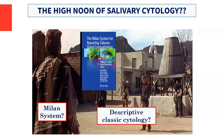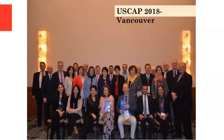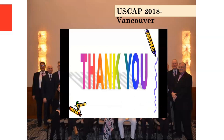There is a significant question: is this the high noon of salivary cytology — the Milan system against descriptive classic cytology? Of course not, because we didn't change anything in the classical evaluation of salivary cytology. We only placed the well-known entities into categories defined by a risk of malignancy and a specific clinical management. Thank you all for your attention, and I'm open to any questions and discussion about salivary cytology and the Milan system.